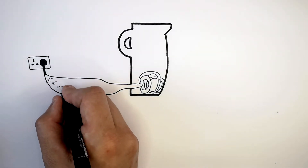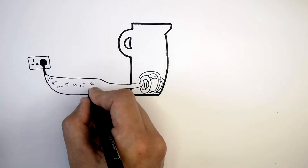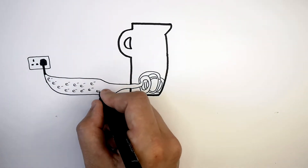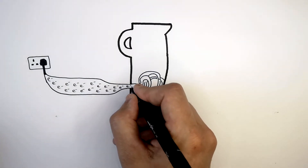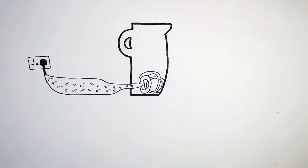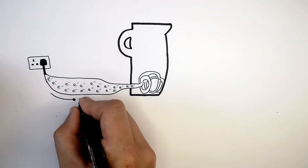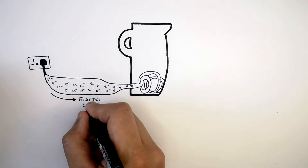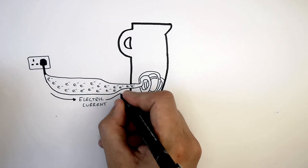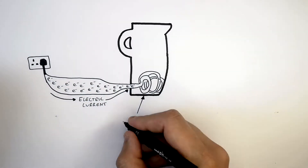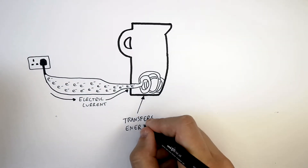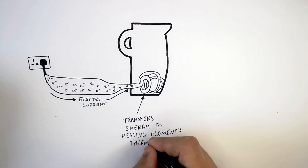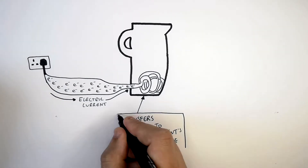When you turn the kettle on there's going to be a flow of electrons, a current that's going to flow into the kettle. So there's going to be a transfer of energy from the electrical energy that is being carried in the current, which transfers energy to the heating element's thermal energy store.